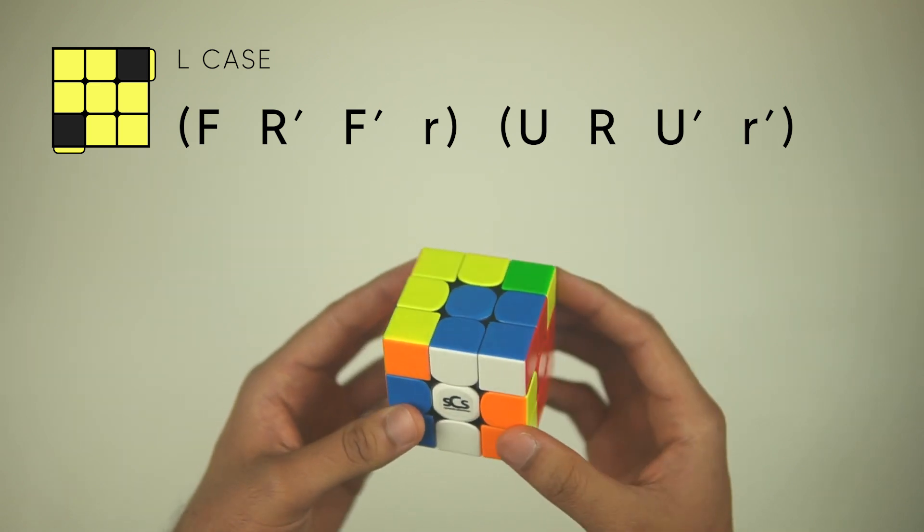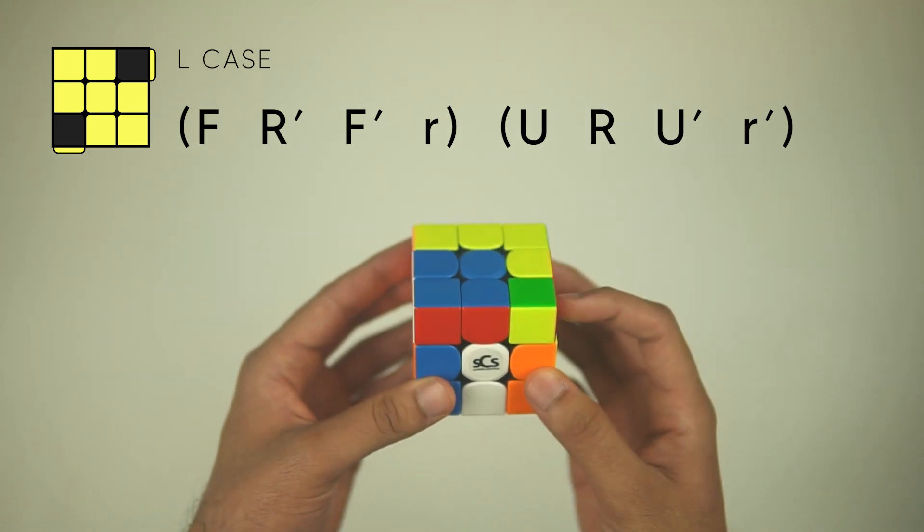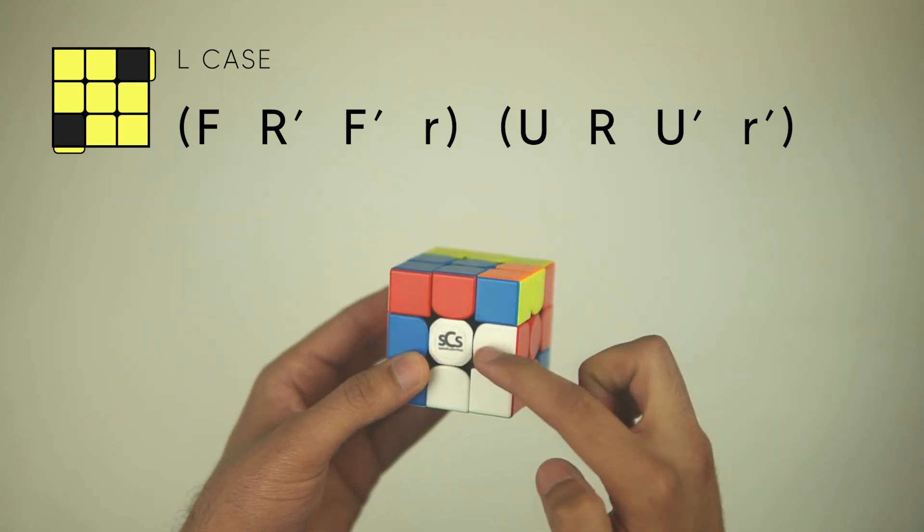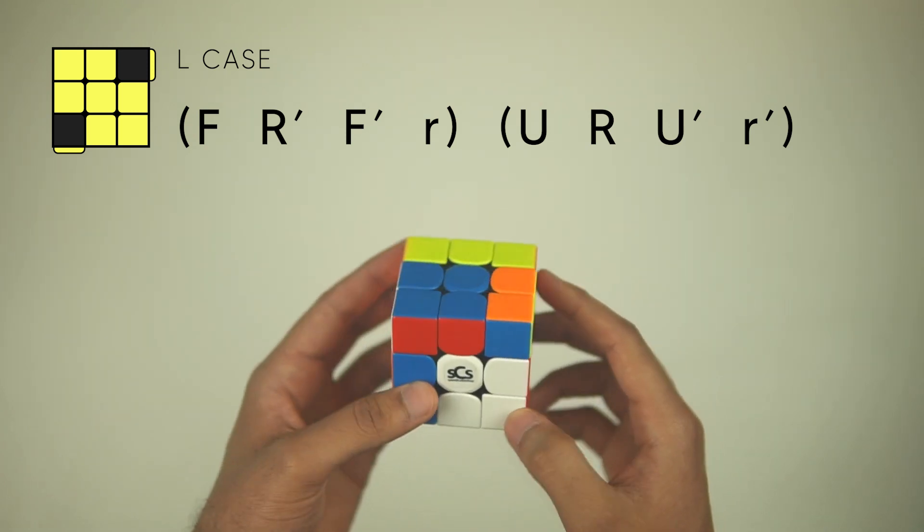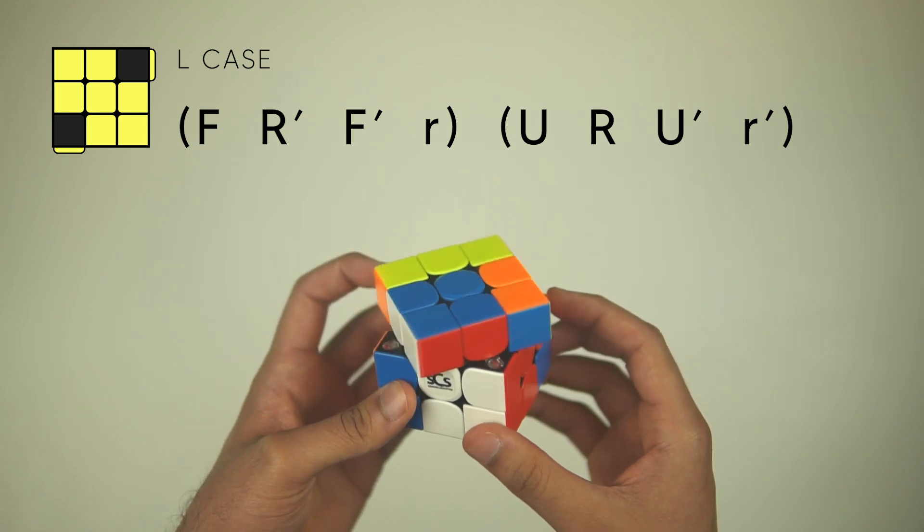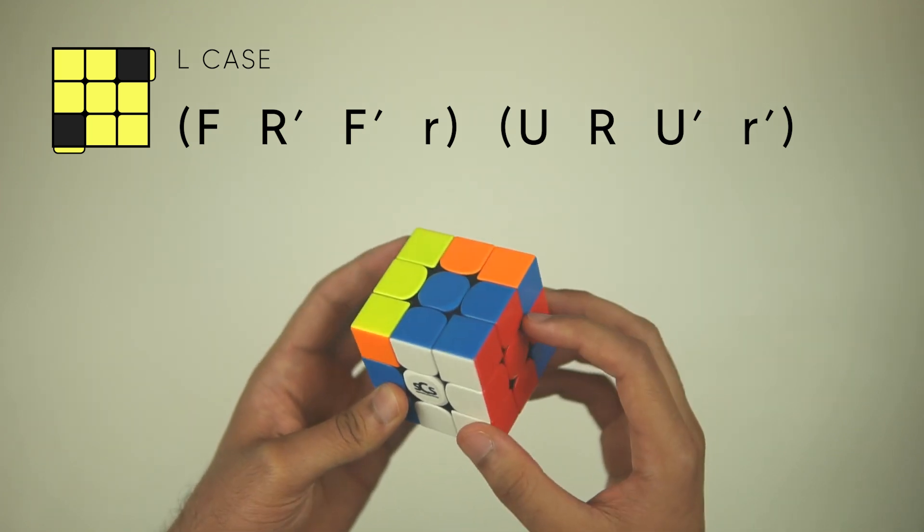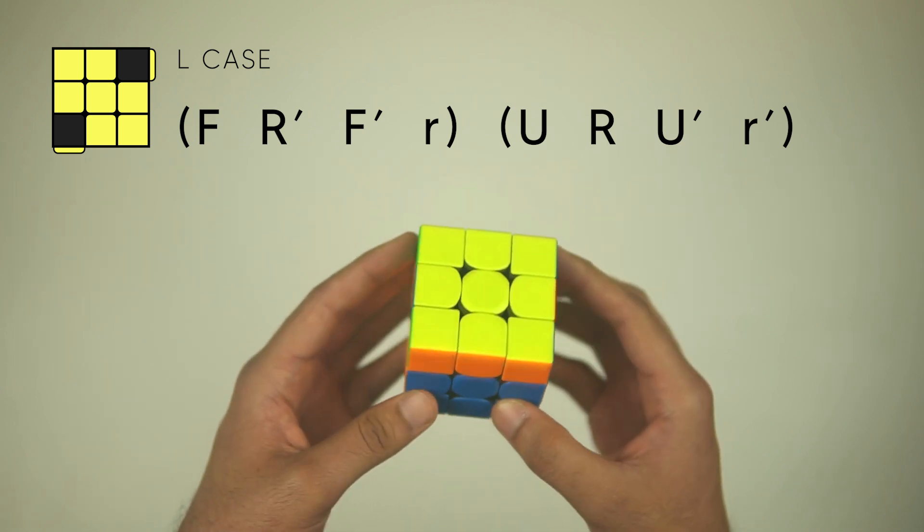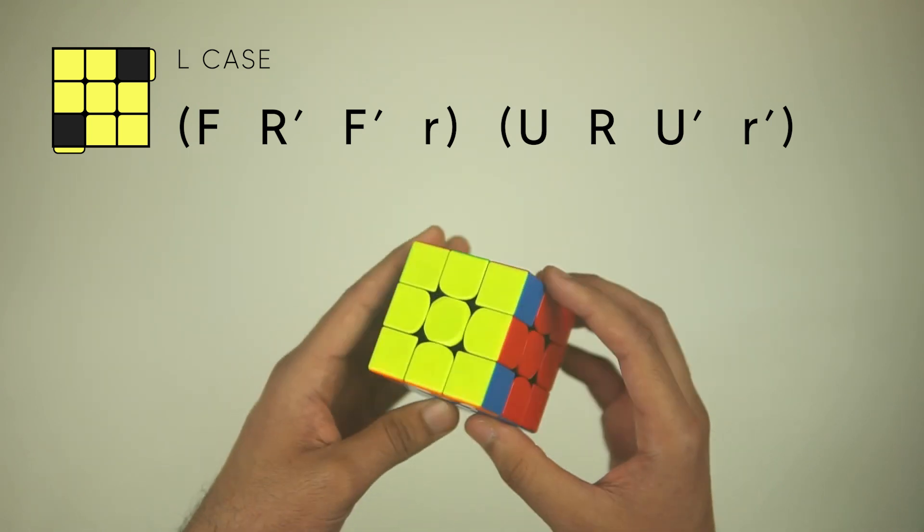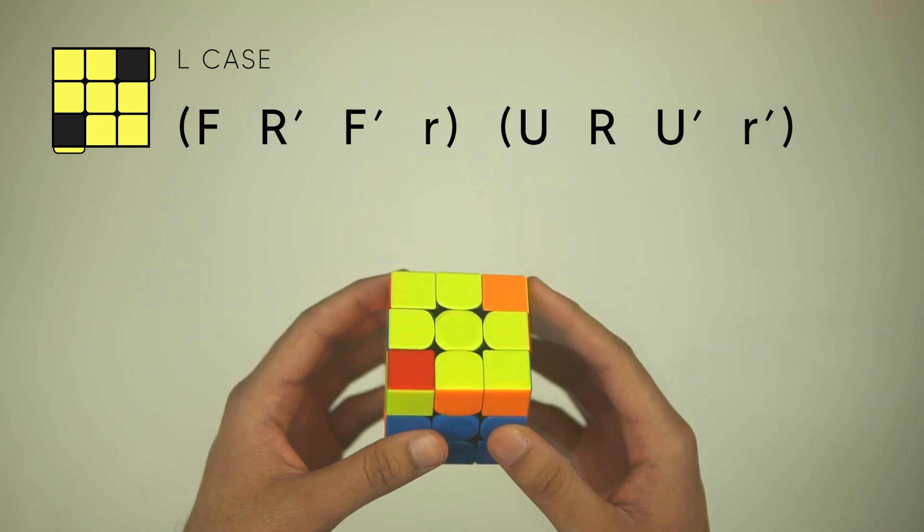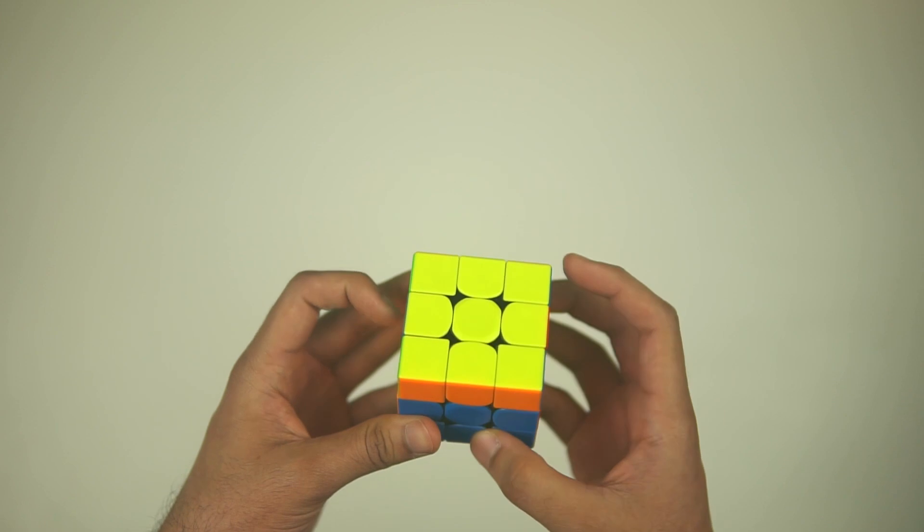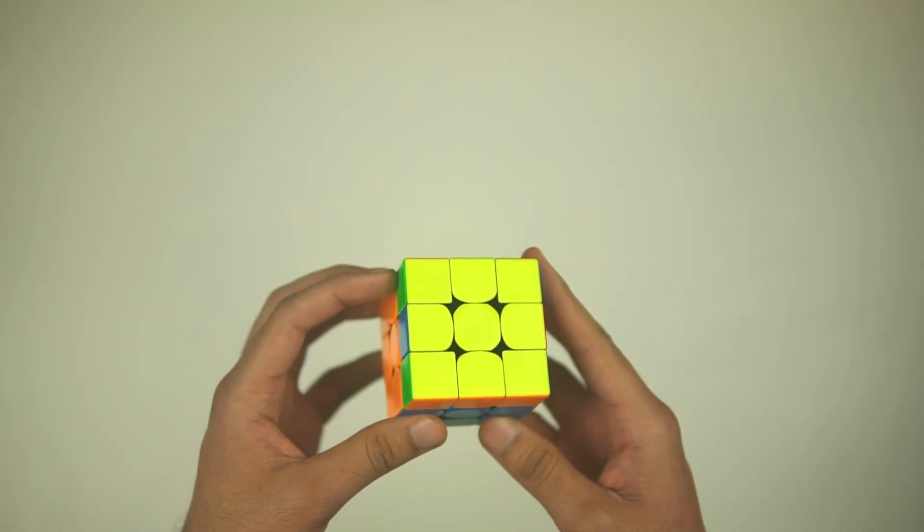And then do a U to move that F2L pair out of the way. Do an R to bring this and connect the cross together. Then, do a U' to kind of fix everything up with the F2L pair, and then just put everything back down with an R', there is OLL done. It definitely seems a bit confusing and can be a bit hard to wrap your head around at first, but it's not too bad once you get the hang of it.